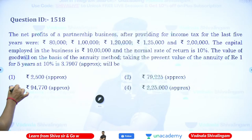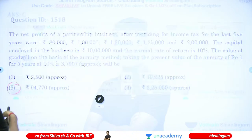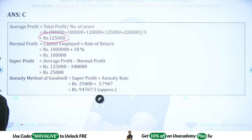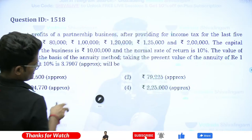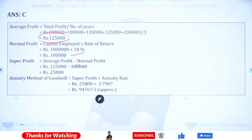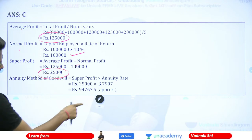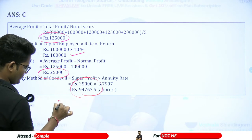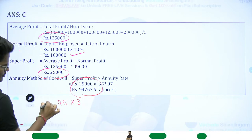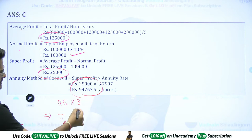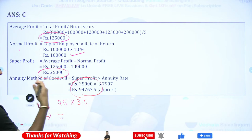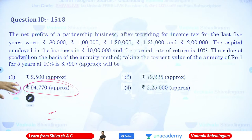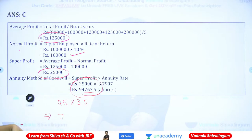Question 16 Goodwill — annuity method: Net profits for last 5 years are 80,000; 1,00,000; 1,20,000; 1,25,000; and 2,00,000. Capital employed is 10 lakhs, normal rate of return is 10%. Answer is option C — 94,770. Average profit = total ÷ 5 = 1,25,000. Normal profit = 10 lakhs × 10% = 1,00,000. Super profit = 1,25,000 − 1,00,000 = 25,000. Goodwill = super profit × annuity value 3.790 = 25,000 × 3.790 ≈ 94,750, approximately 94,770.